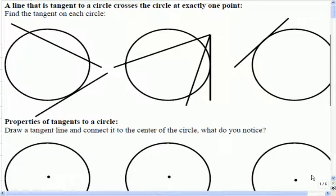First we're going to discuss properties of tangents. Tangents are a line that only touches one part of the circle.